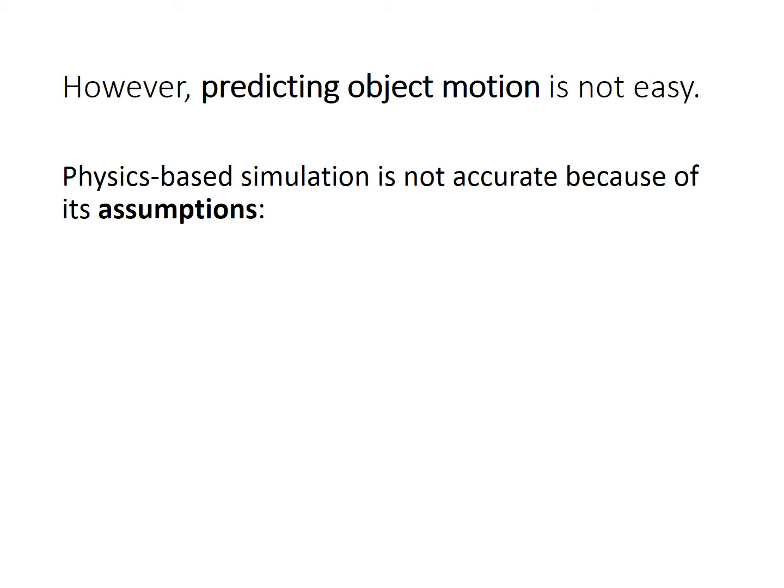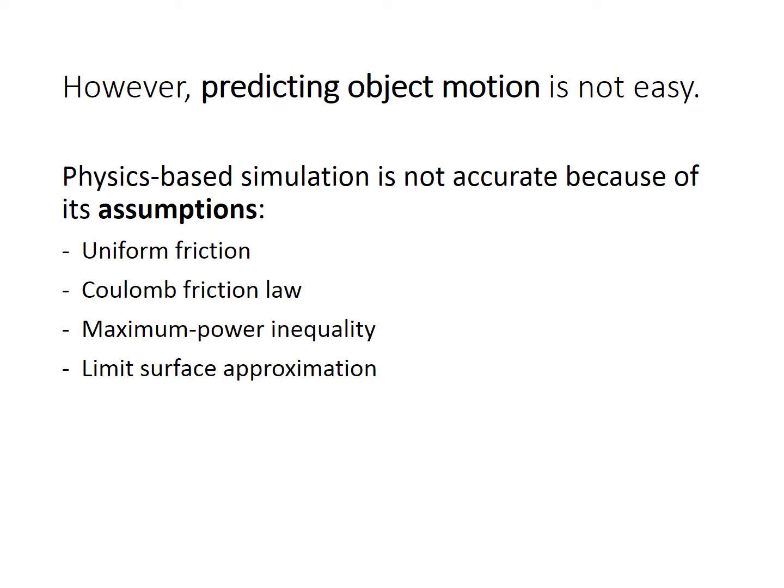The physics-based simulation is not accurate, often because of its assumptions. Common assumptions include uniform friction, Coulomb friction law, maximum power inequality, limit surface approximation, and many others. We found that they do not apply under all situations in our experiments.